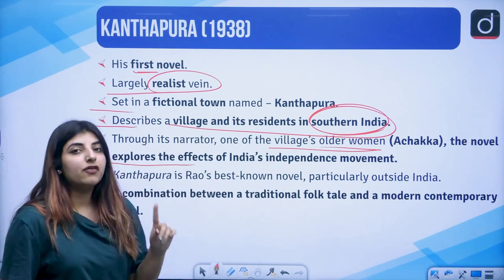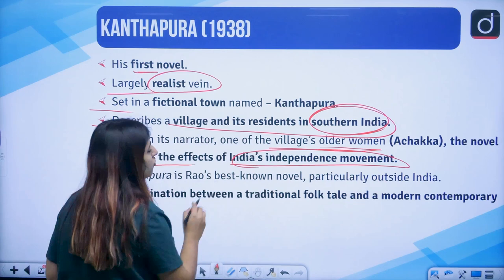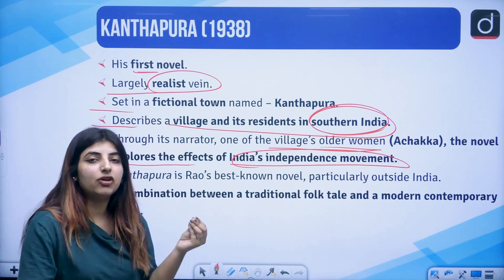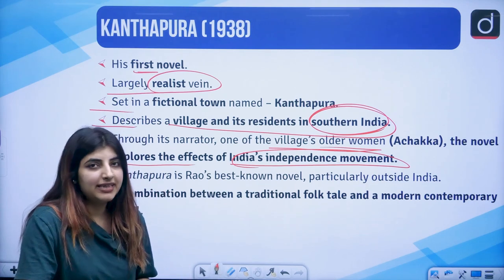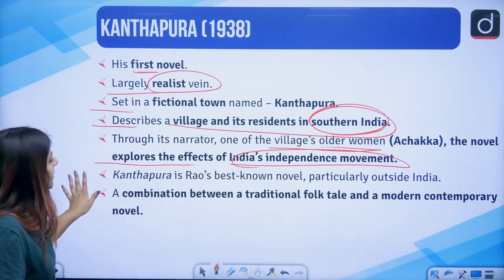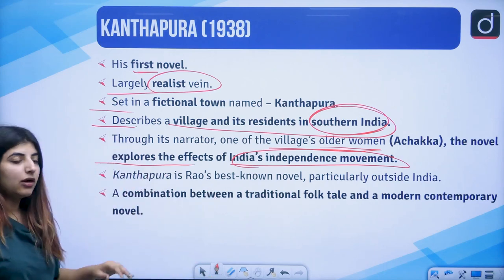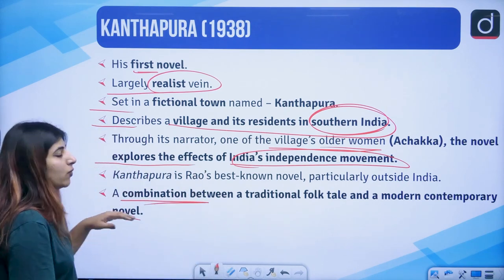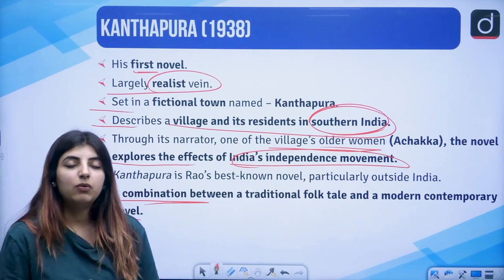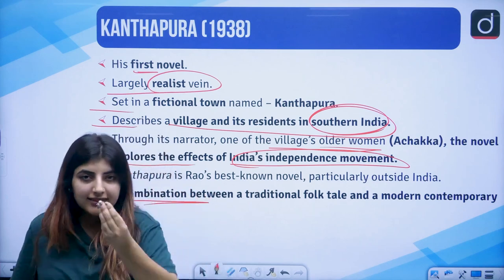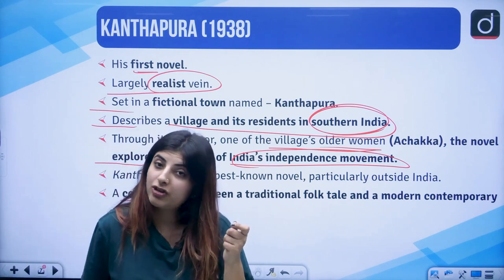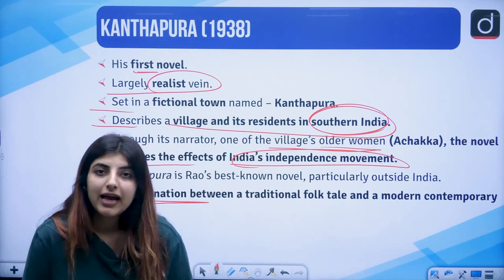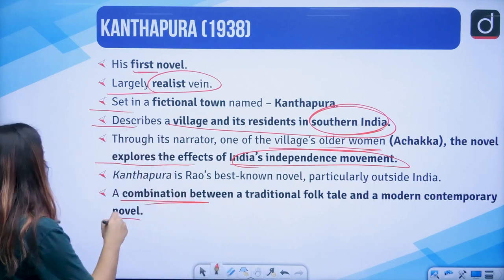The novel explores the effects of India's independence movement. Here also you will see the effect of Mahatma Gandhi's civil disobedience and non-violence movement — Ahimsa. It is his best-known novel, particularly outside India, and is a combination between the traditional folk tale and the modern contemporary novel. Kanthapura is somewhere related to traditional folklore and also has modern elements in it.